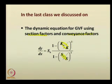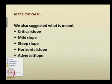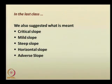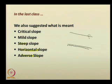The dynamic equation gives you the slope of the water surface profile. We also discussed what is meant by critical slope regarding the bed slope of the channel. For any channel, the bed slope can be considered as a critical slope, a mild slope, a steep slope, a horizontal slope, or an adverse slope — all these things were described in the last class.